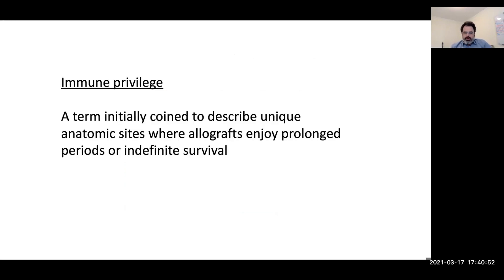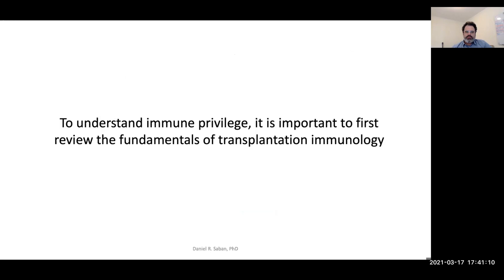One of the main differences being that the threshold for eliciting a pathogenic inflammatory response is a lot higher in immune privileged tissues. The term immune privilege was initially coined to describe unique anatomic sites where allografts enjoy prolonged periods or indefinite survival. This is an operational term, and in order to understand it, we must first review some fundamentals of transplantation immunology.